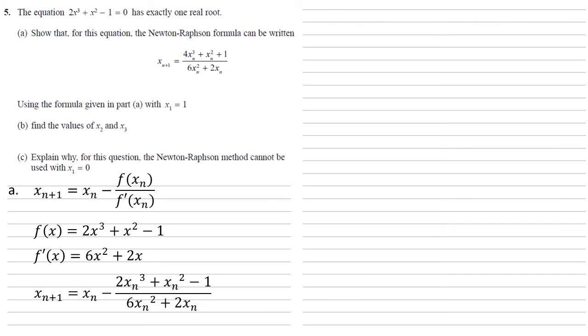Now the equation we're aiming for has just got the one fraction on the right, so we need to bring our terms together. We're going to do that by making our x n into a fraction with the same denominator. So multiplying top and bottom by 6x n squared plus 2x n gives us this.